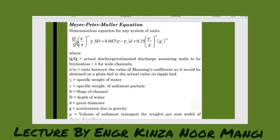The terms are (Qs/Q)(n/n')^(3/2) γw^(1/3) d = 0.047(γ - γw)d + 0.25(γw/g)^(1/3) (gs')^(2/3). So here these terms are defined that what they are.